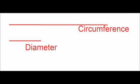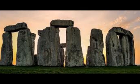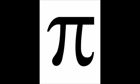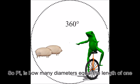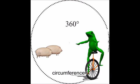Instead of having to write that number all of the time, they gave it this Stonehenge-looking symbol instead. So pi is how many diameters equal the length of one circumference.